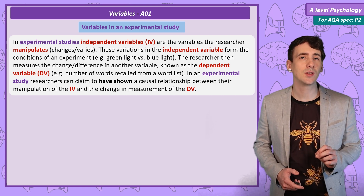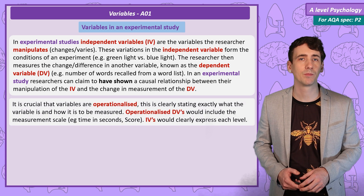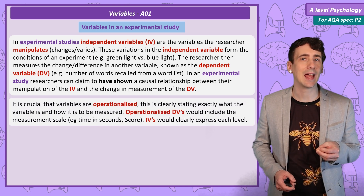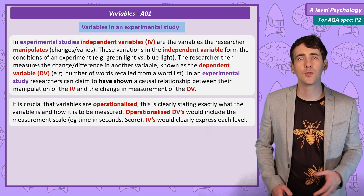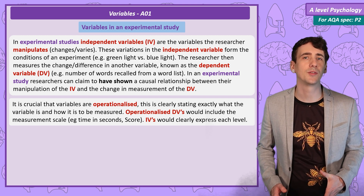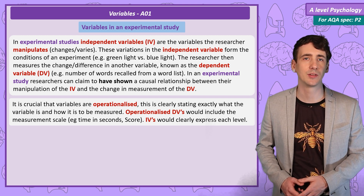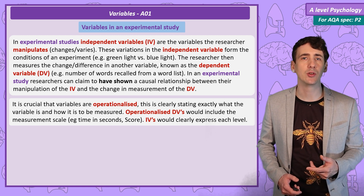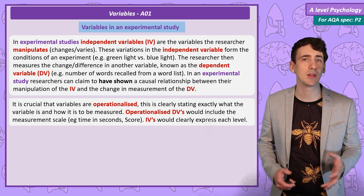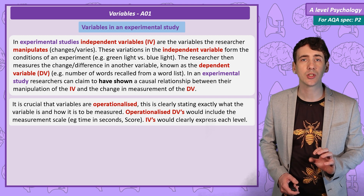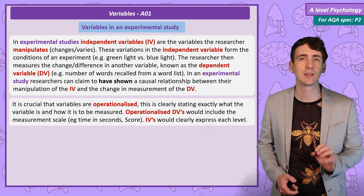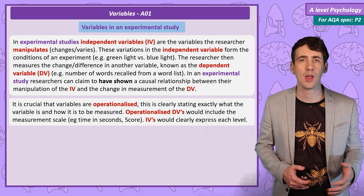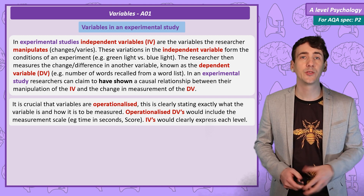An important concept is operationalisation. When stating the dependent variable, I need to specify exactly how it is being measured. So if I wanted to know how effective a course of anger management therapy was, instead of saying 'reduction in anger', I might measure it by a reduction in the score on a questionnaire that measures hostility, or a reduction in the number of times a student has had a verbally aggressive outburst to teaching staff over say the next month. So that's the ideal.